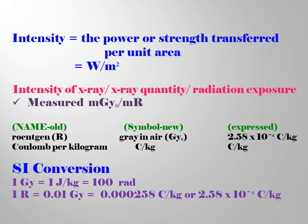Also, the old radiation exposure is coulomb per kilogram. The new radiation exposure unit symbol is gray in air.